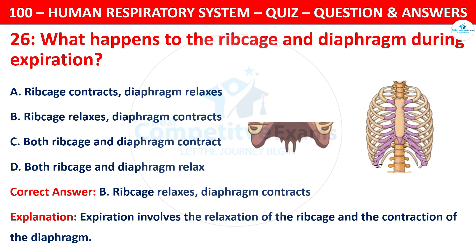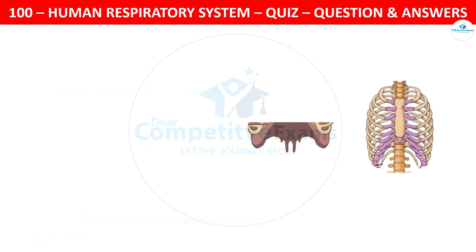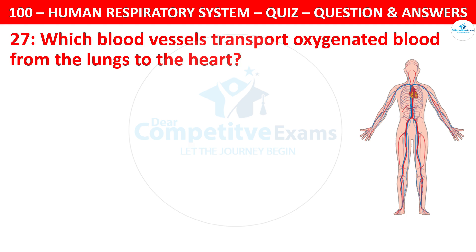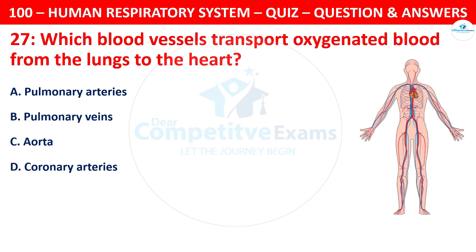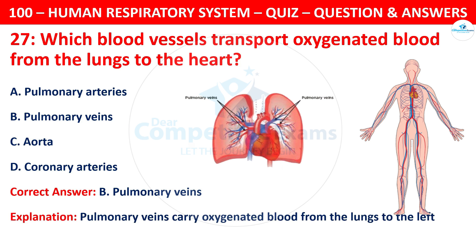Question 27: Which blood vessels transport oxygenated blood from the lungs to the heart? Your options are: pulmonary arteries, pulmonary veins, aorta, or coronary arteries. The correct answer is B — pulmonary veins. Pulmonary veins carry oxygenated blood from the lungs to the left atrium of the heart.